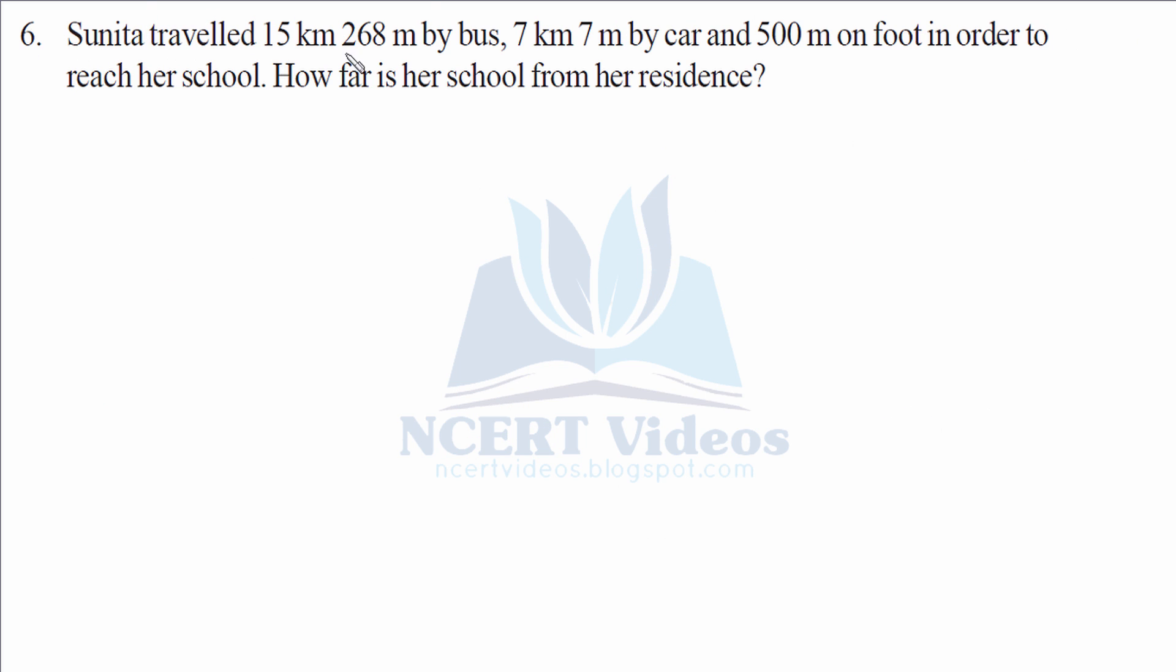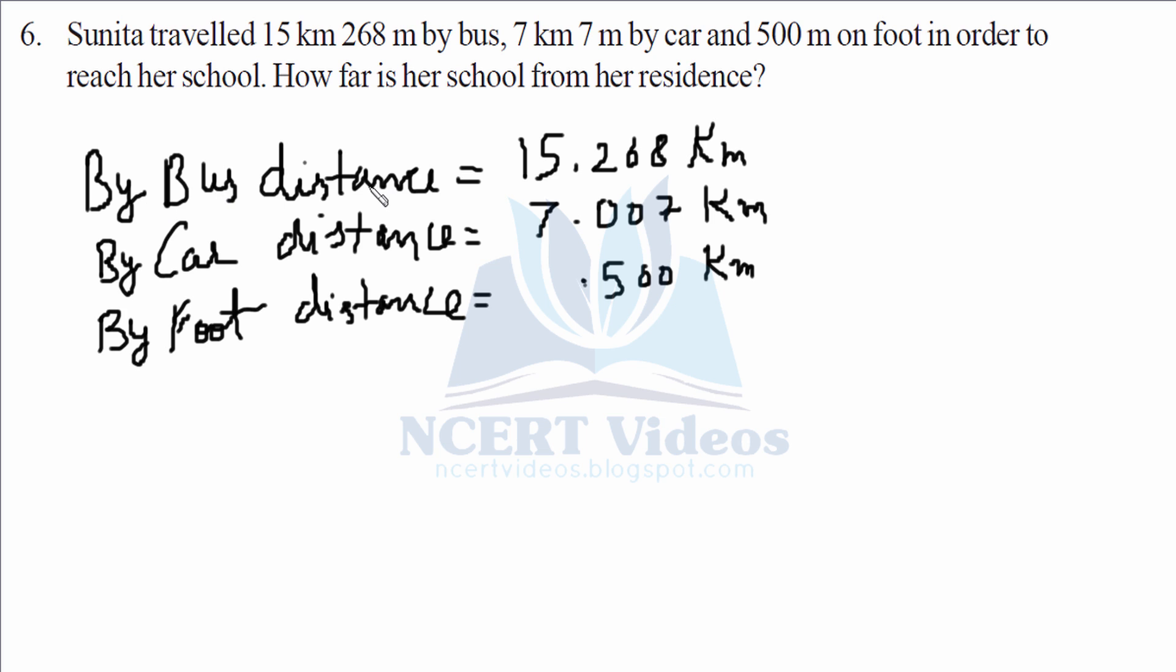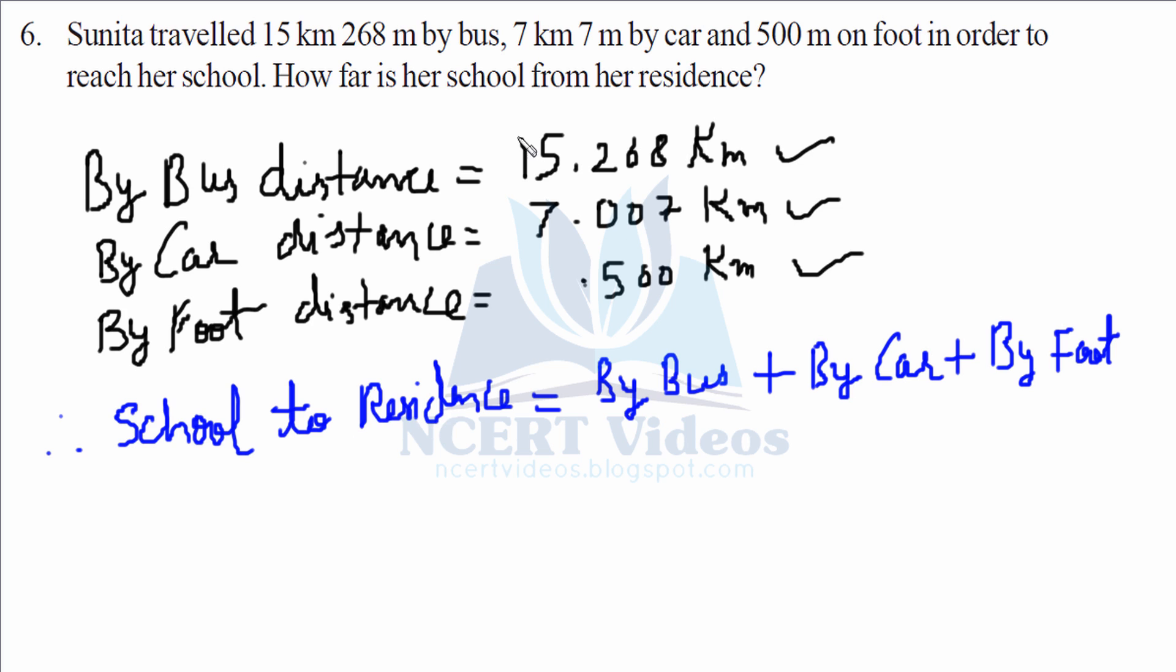Nita walked 15 kilometer 268 meter by bus, by car 7 kilometer 7 meter, and 500 meter. We're asked to find total distance from her school to her residence. We have converted into kilometers, so now we'll add them up. 8 plus 7 gives 15, 1 carry, 7, again 7, 7 plus 5 gives 12, and 2. That is 22.275 kilometers total distance.